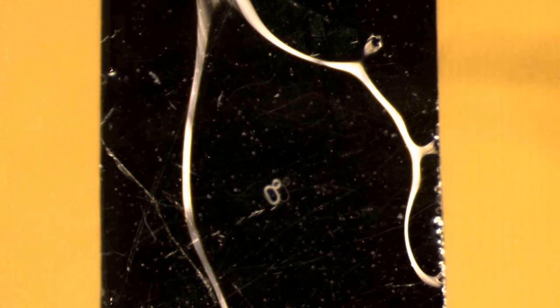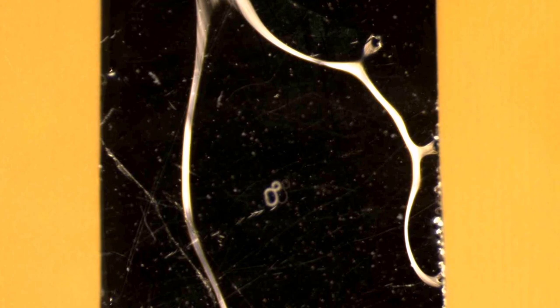It is important for the nematode not to float on the surface in order to avoid losing it when the cover slip is placed on top of it.